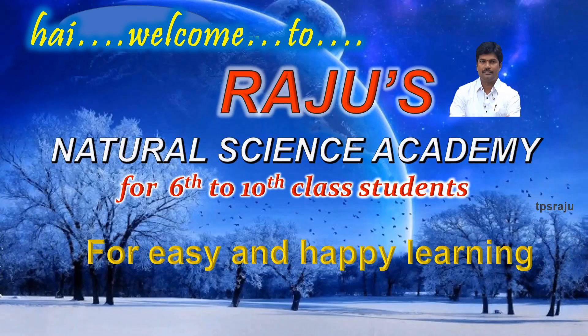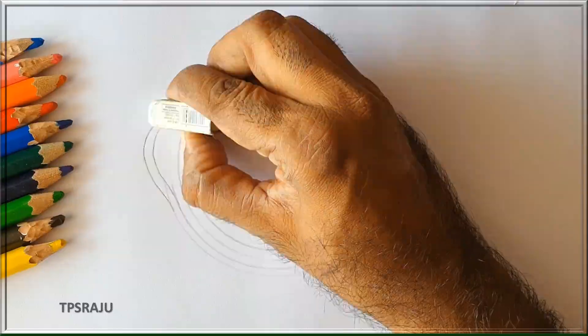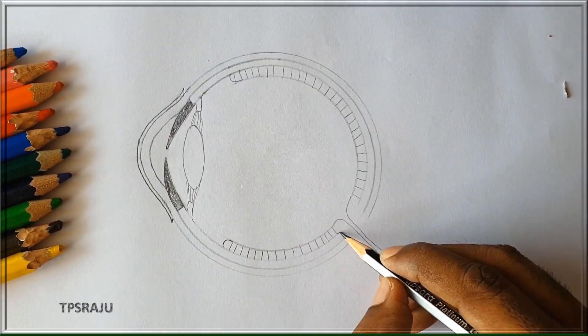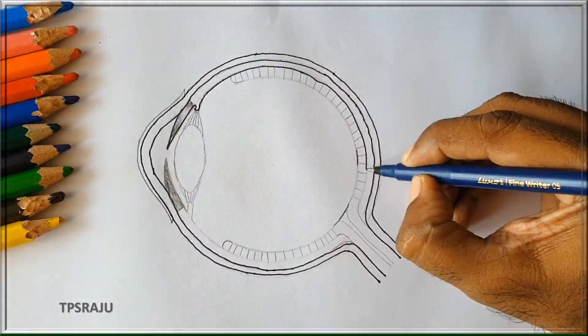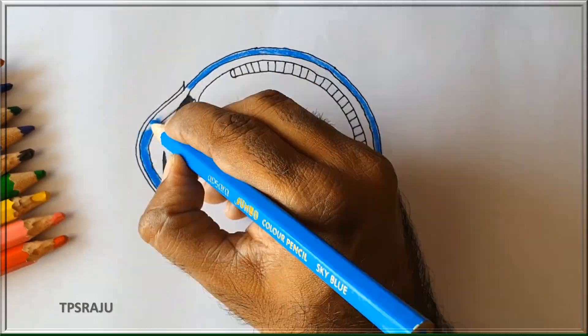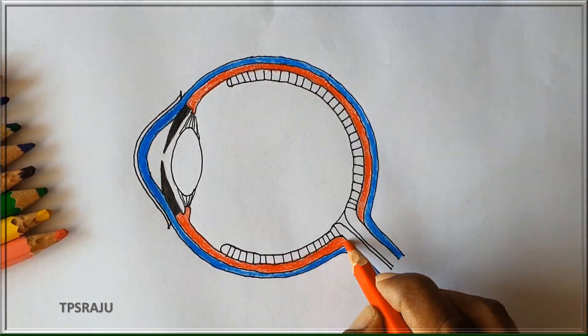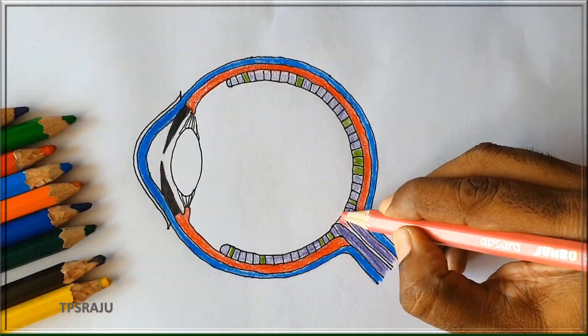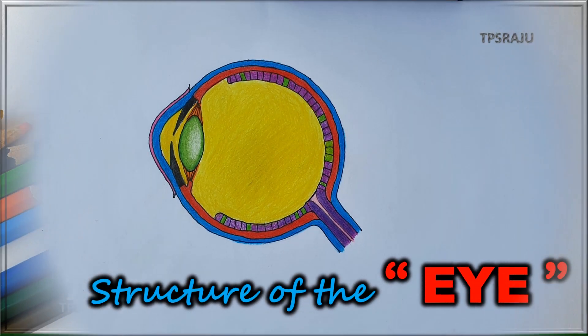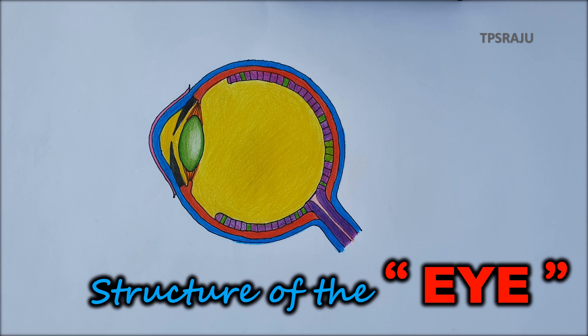Hi, welcome to Raju's Natural Science Academy for easy and happy learning. Today we are going to learn about how to draw the eye diagram simply and easily within 5 minutes, and we are also going to learn the structure of the eye.